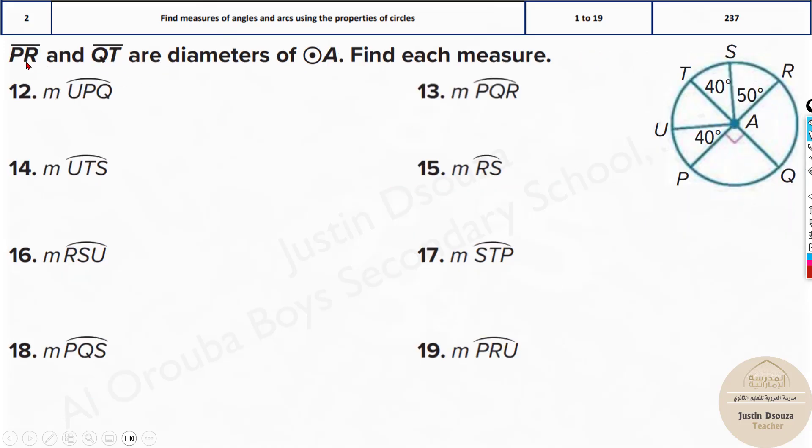Now we have another problem. PR and QT are the diameters. Now we need to find these measures. What is UPQ? UPQ is this, it's 90 plus 40, 130. Same way do the others.